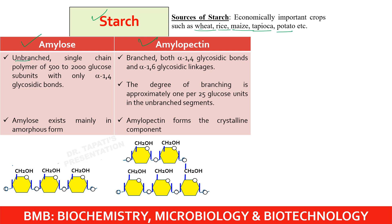Amylose is an unbranched, single-chain polymer of about 500 to 2000 glucose subunits with only alpha-1,4 glycosidic bonds. In contrast, amylopectin is branched, containing both alpha-1,4 and alpha-1,6 glycosidic linkages. The degree of branching in amylopectin is approximately one per 25 glucose units. Amylose exists mainly in amorphous form, whereas amylopectin forms the crystalline component.